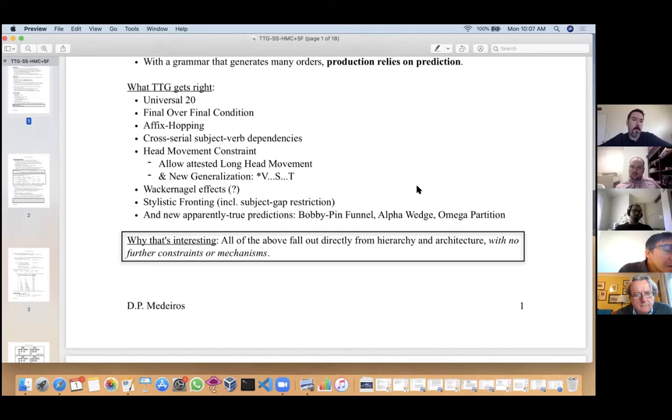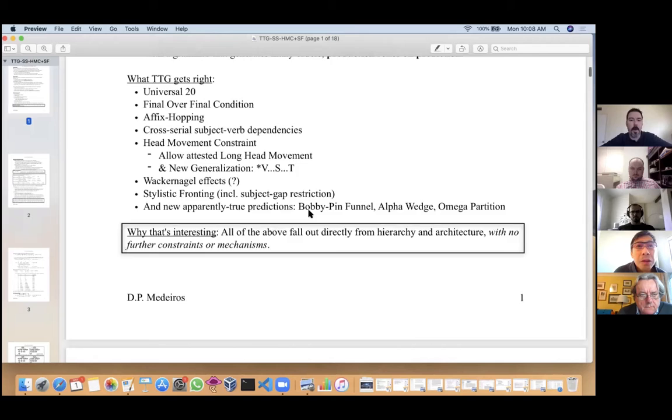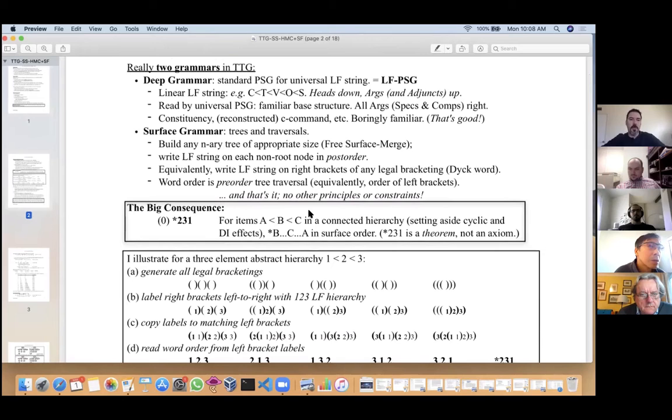We get Wackernagel effects, second position effects, and a nice account of stylistic fronting as seen in Icelandic, including various restrictions on it. We also derive a variety of new apparently true predictions that have no correlate in the literature. The reason all this is interesting is that all of these effects, all these predictions, come out as immediate consequences of the single universal specification of a hierarchy of the base structure and a specification of the architecture that generates word orders from that. There's no further constraints or mechanisms.